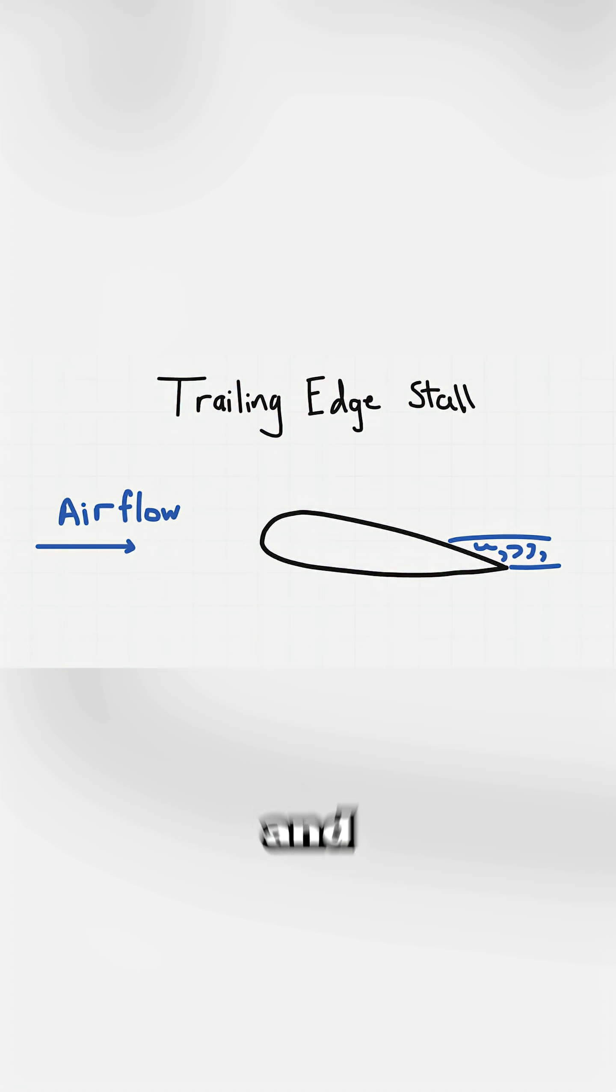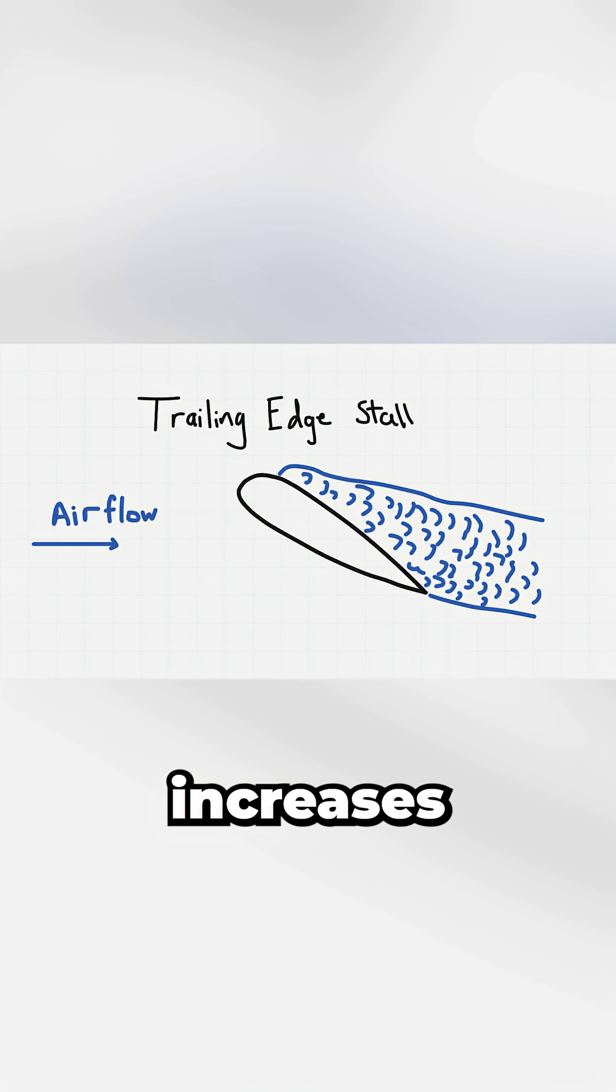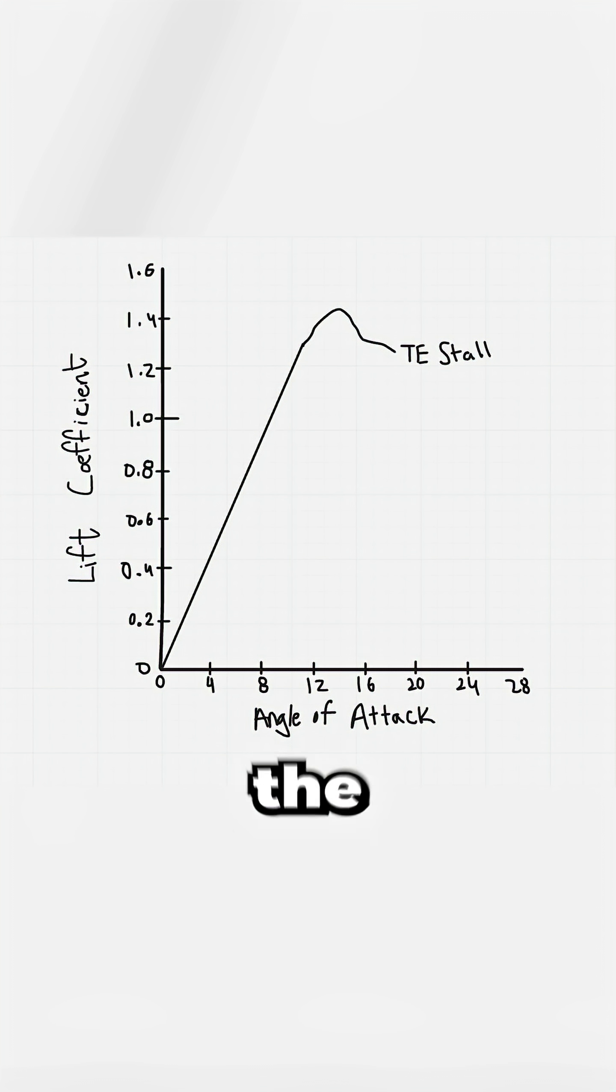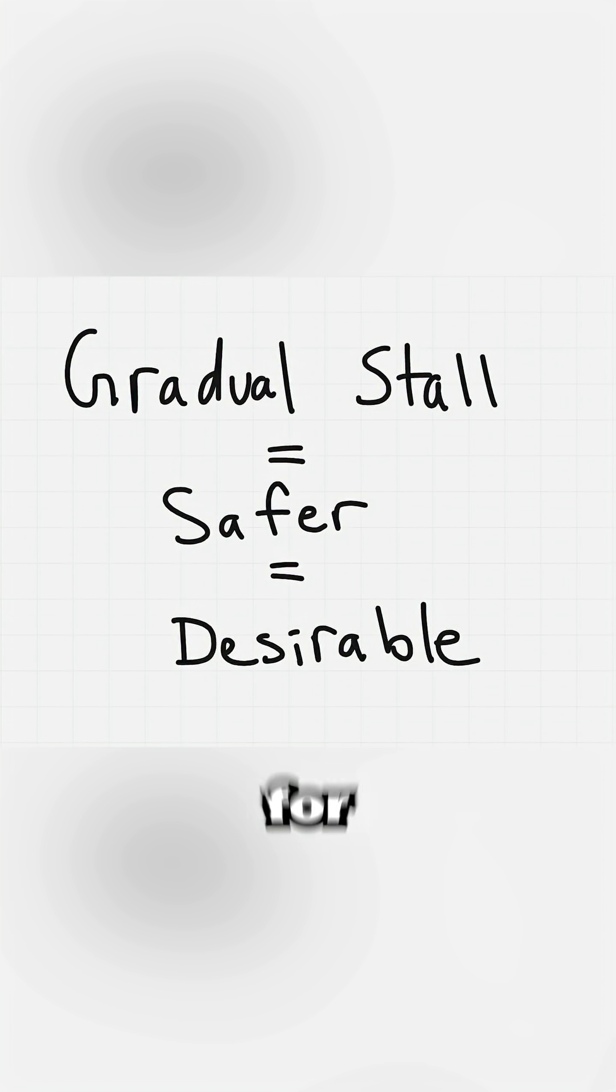The airflow begins to separate at the trailing edge and moves forward as the angle of attack increases. The loss of lift is gradual and the airfoil pitches down gradually as well. For these reasons, this stall behavior is desirable.